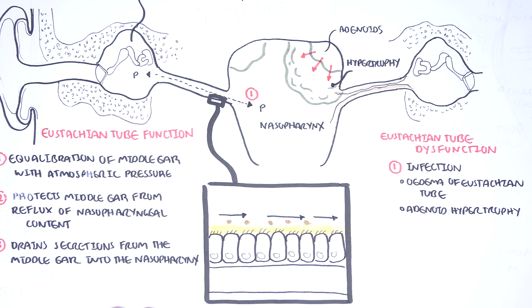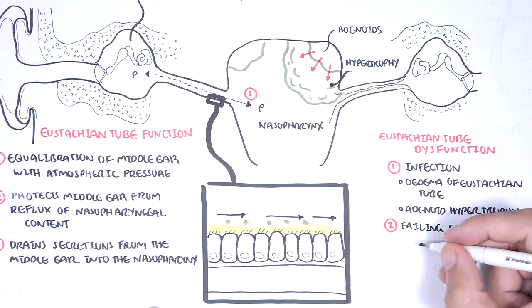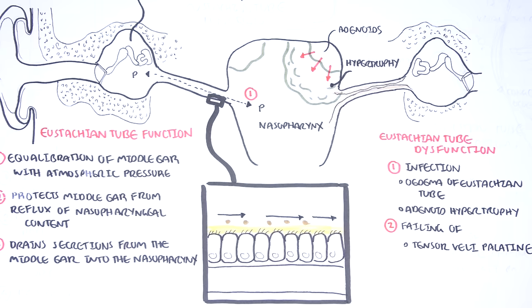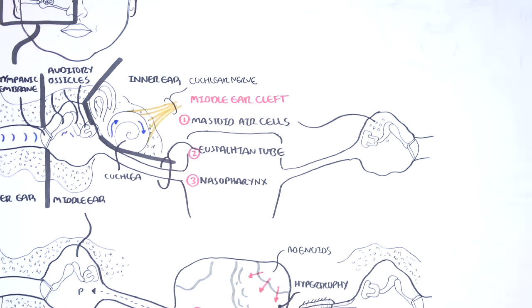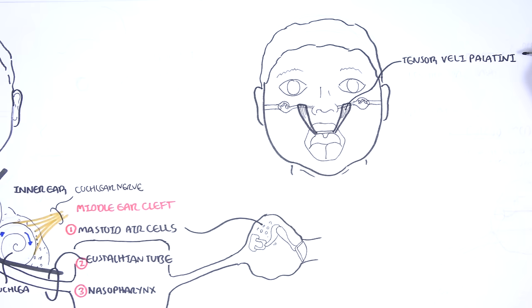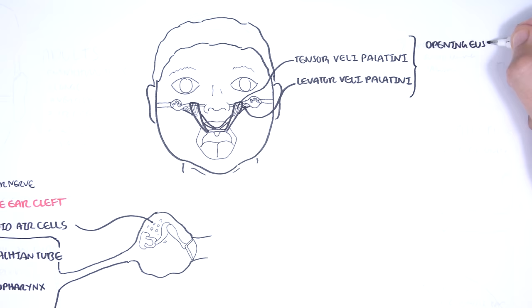Another cause of eustachian tube dysfunction is failure of some of the muscles that connect or wrap around or pass through the eustachian tube. These include failing of the tensor velli palatini and levator velli palatini. These muscles help in opening the eustachian tube, but are primarily used and involved in swallowing and yawning.